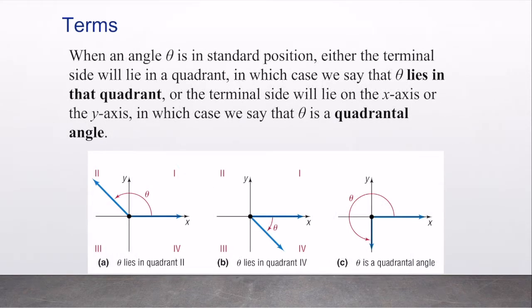When an angle theta is in standard position, either the terminal side will lie in a quadrant, in which case we say that theta lies in that quadrant – and remember there are four quadrants: quadrant one, two, three, and four, named counterclockwise – or the terminal side will lie on the x-axis or y-axis, in which case we say that theta is a quadrantal angle.